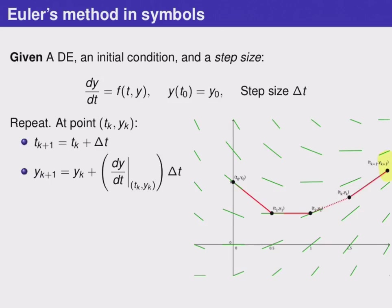This method is called an iterative method, meaning that we iterate or repeat the same steps every time using the previous point in these formulas to get a new point. We can keep doing this for as long as we would like.